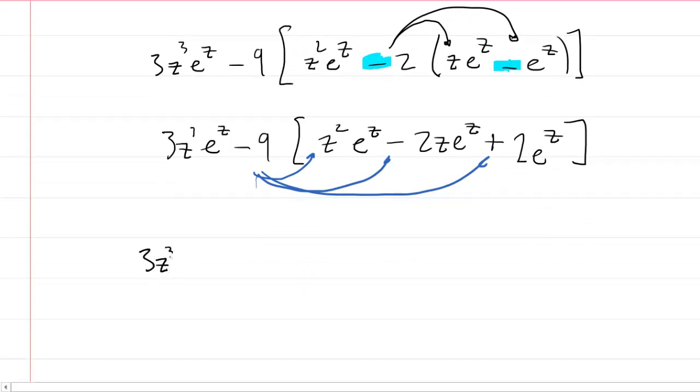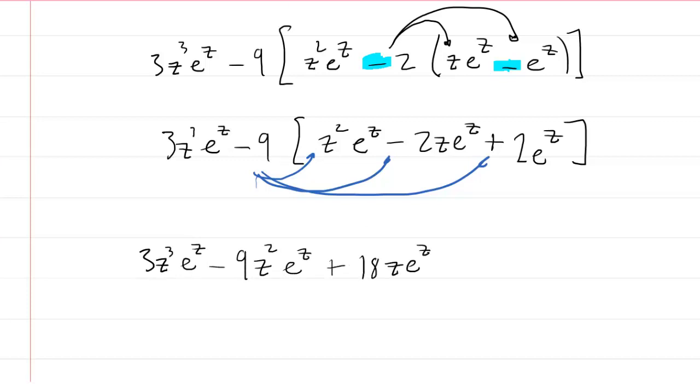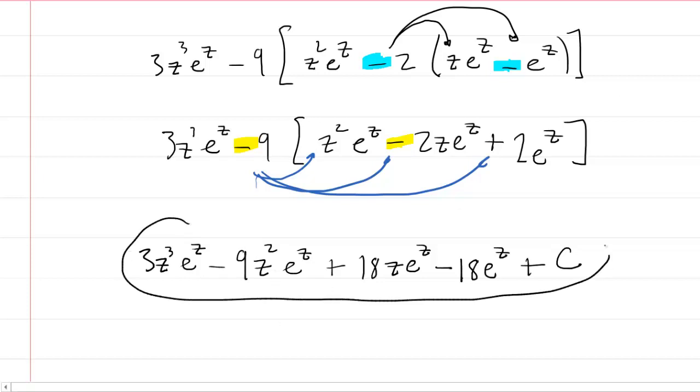So here we have it, 3z cubed e to the z minus 9z squared e to the z plus 18z e to the z. Notice the plus again, because a minus combined with a minus. And then we're going to have a minus 18e to the z. And then don't forget the constant of integration at the end of the problem. And that indeed becomes our final answer.